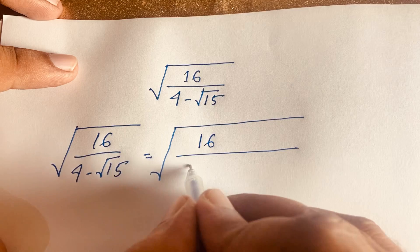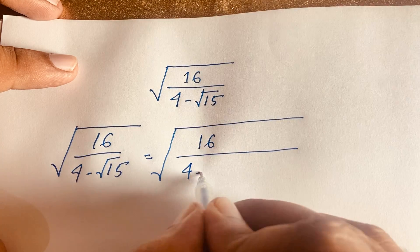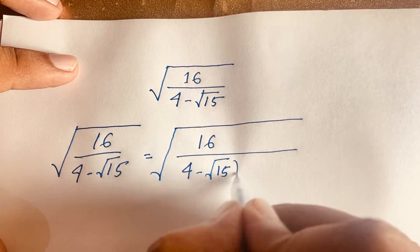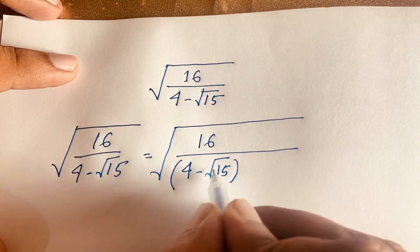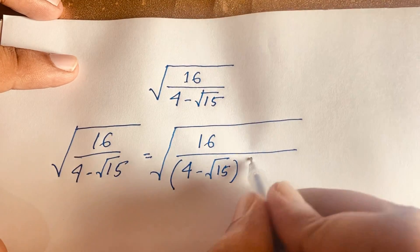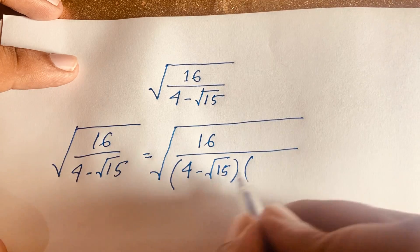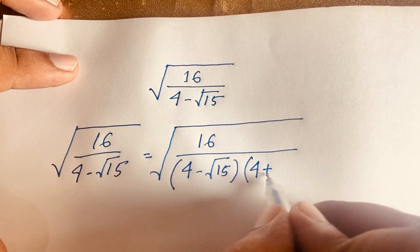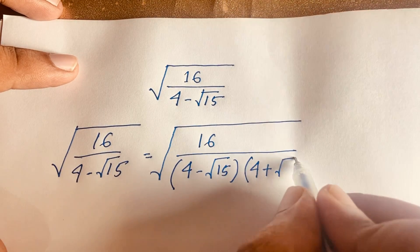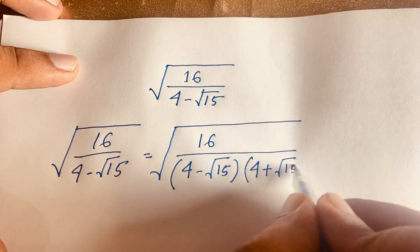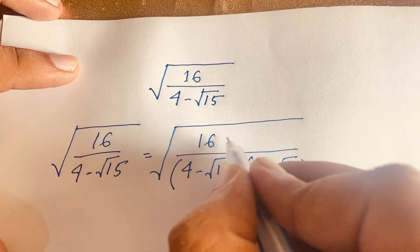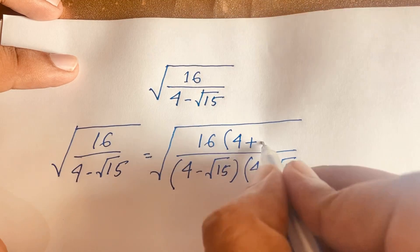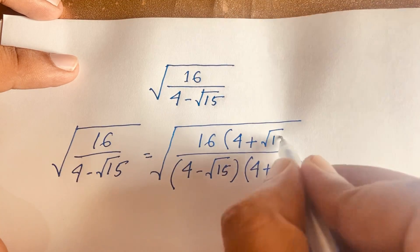Here is 16 and here is 4 minus square root 15. Since this is negative below, I multiply up and down by the conjugate: 4 plus square root 15, and here is 4 plus square root 15.